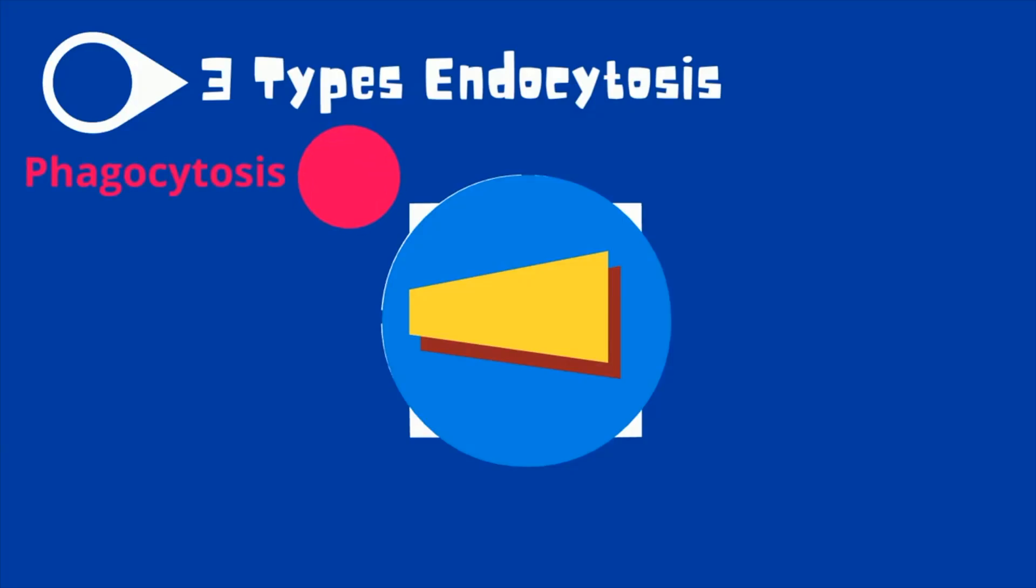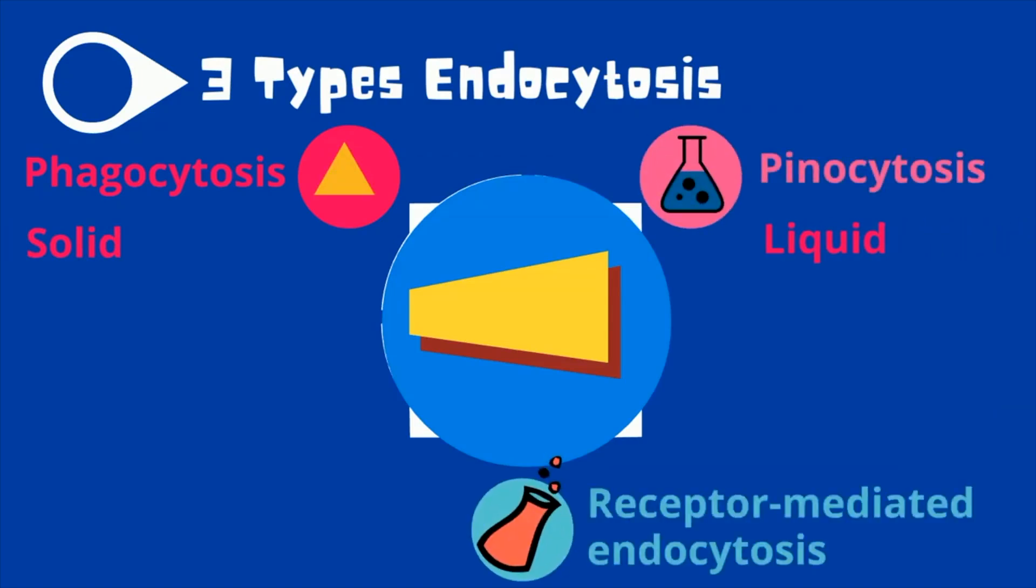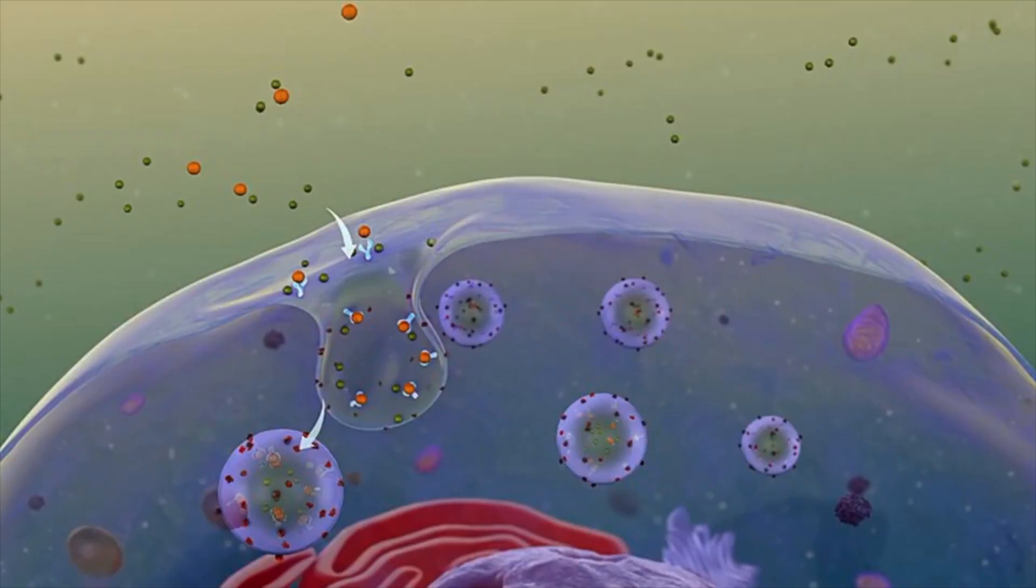Phagocytosis, which is when a cell moves in solids. Pinocytosis, which is when a cell moves in liquids. And receptor-mediated endocytosis, which is a form of endocytosis in which receptor proteins on the cell surface capture a specific target molecule. When the receptors bind to their molecule, endocytosis is triggered, and the receptors and their attached molecules are taken into the cell in a vesicle.